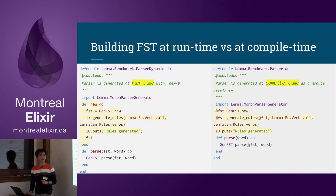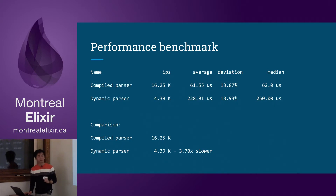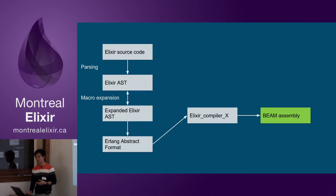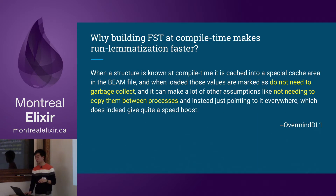You can take a guess now because the answer will come right after. We actually see that the compiled parser is almost four times faster than the dynamic parser. This may seem counterintuitive — you're computing the same graph, so what makes this huge difference? The magic happens at the last step of compilation: the BEAM assembly compilation. If the compiler knows the structure of data at compile time, it marks that section as 'no need to be garbage collected, no need to be copied among processes'. So when you run the program, it doesn't copy, it doesn't garbage collect — that's why it runs much faster.